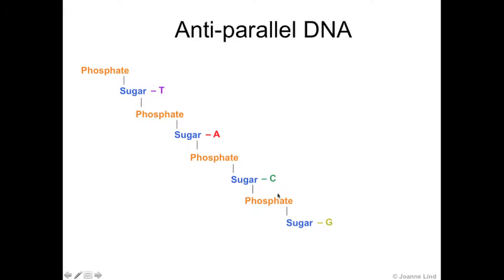G represents guanine, C represents cytosine, A represents adenine, and T represents thiamine. The point that I want to get across in this animation is the anti-parallel nature of DNA.